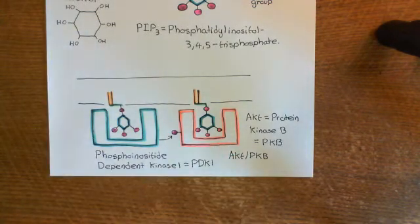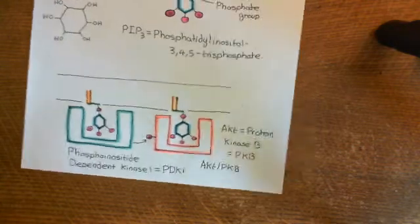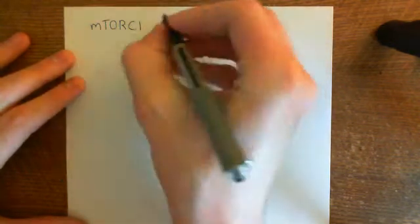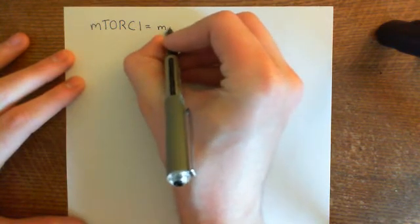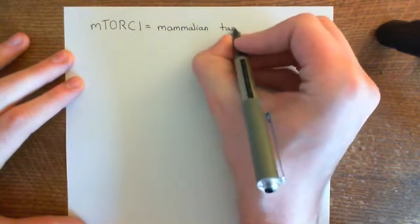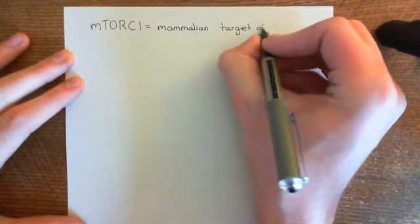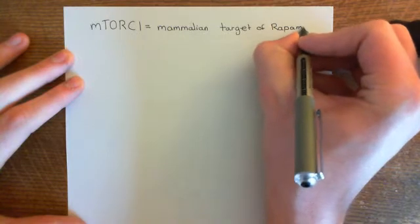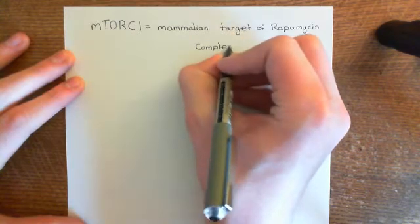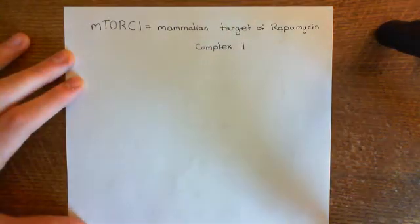AKT is going to activate something known as mTORC1. This stands for the mammalian target of rapamycin — or some call it the mechanistic target of rapamycin — complex 1. Taking the initials gives you mTORC1: M for mammalian, T for target, O for of, R for rapamycin, C for complex, and then 1. This is a whole bunch of proteins all bound together.